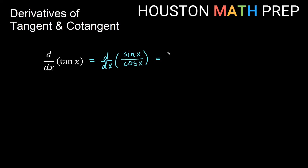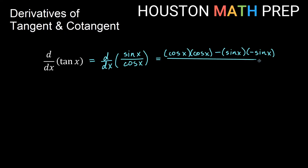So remember it will be the low function first — cosine of x — times the derivative of the high function; the derivative of sine x is cosine x, minus for the quotient rule. Now we have the high function sine x times the derivative of the low function, and the derivative of cosine x is going to be negative sine x. That's our numerator, and now we'll have all of that over cosine squared x.